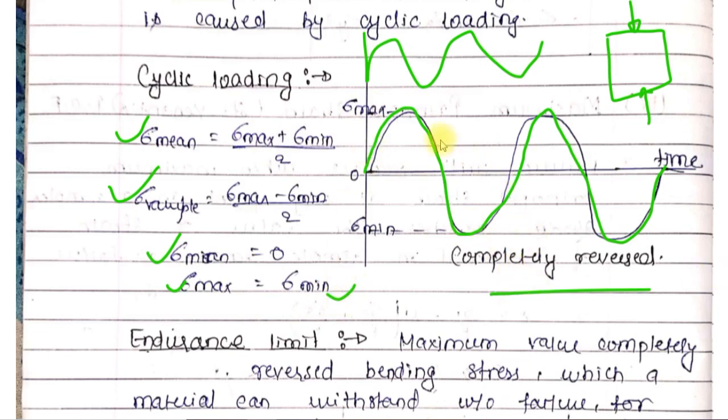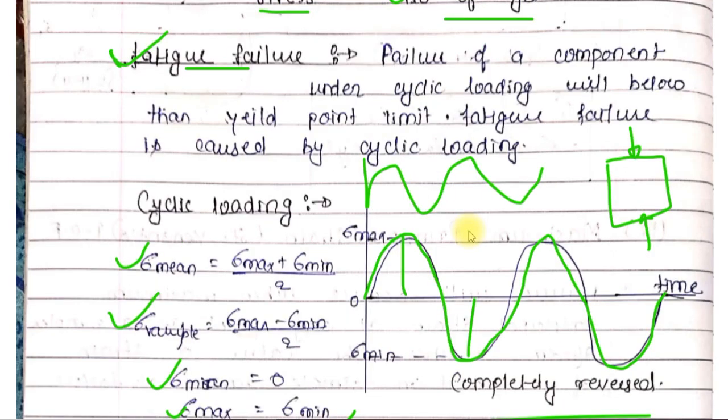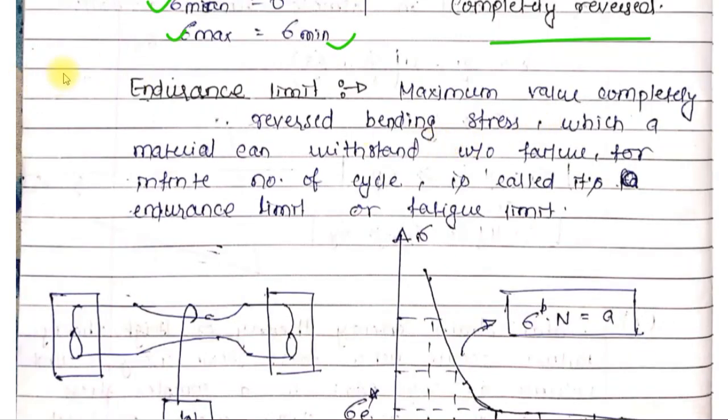So when there is cyclic loading, fatigue failure occurs. Fatigue in the sense means fluctuation. So fluctuation failure is fatigue failure. This is also called endurance limit or fatigue limit.